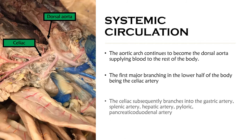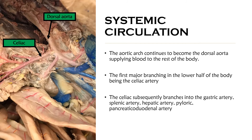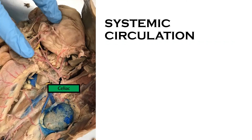The celiac artery is considered a major branch because it subsequently branches into the gastric artery, the splenic artery, the hepatic artery, the pyloric artery, the pancreaticoduodenal artery, and several others as well. We're going to go over each of them.